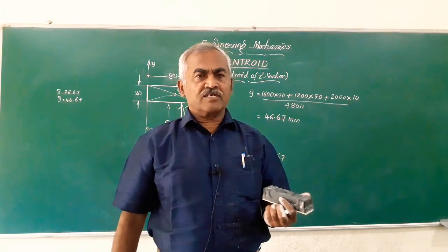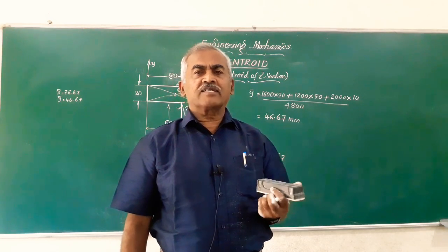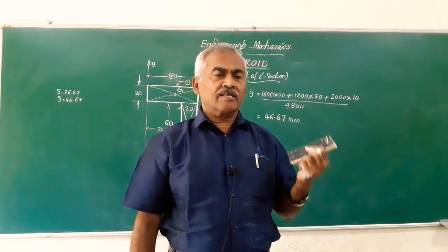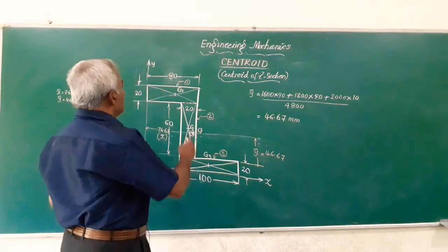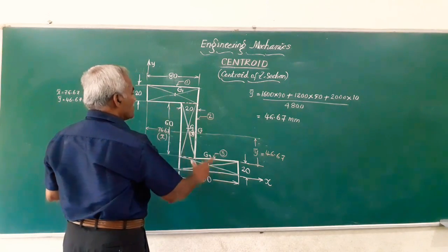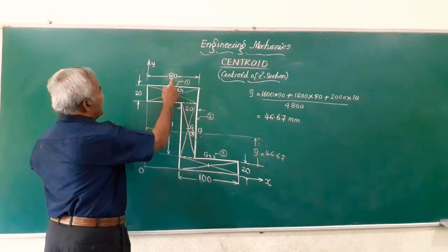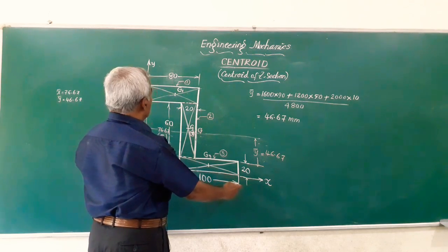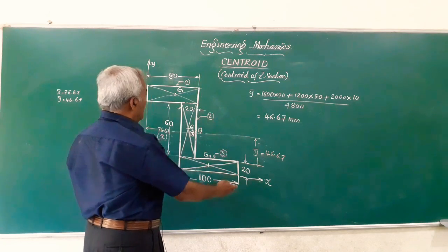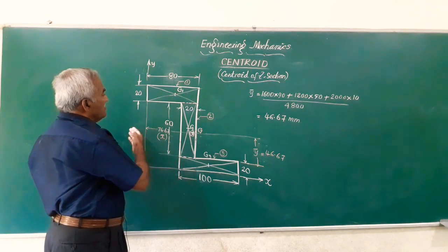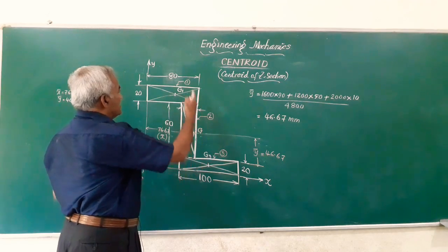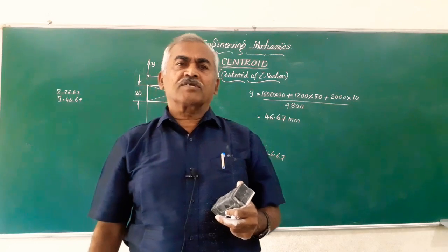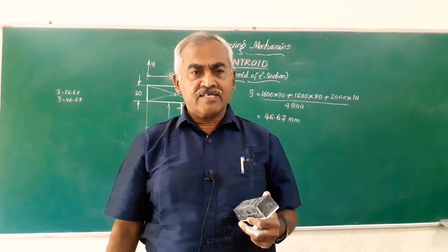We have followed the procedure to calculate the centroid of the given Z-section. In the same problem, if the two flanges were equal — for example, if both were 100 mm instead of 80 mm and 100 mm — then the section would become symmetrical about both the X-axis and the Y-axis. I thank you all for watching my video. Have a nice day.